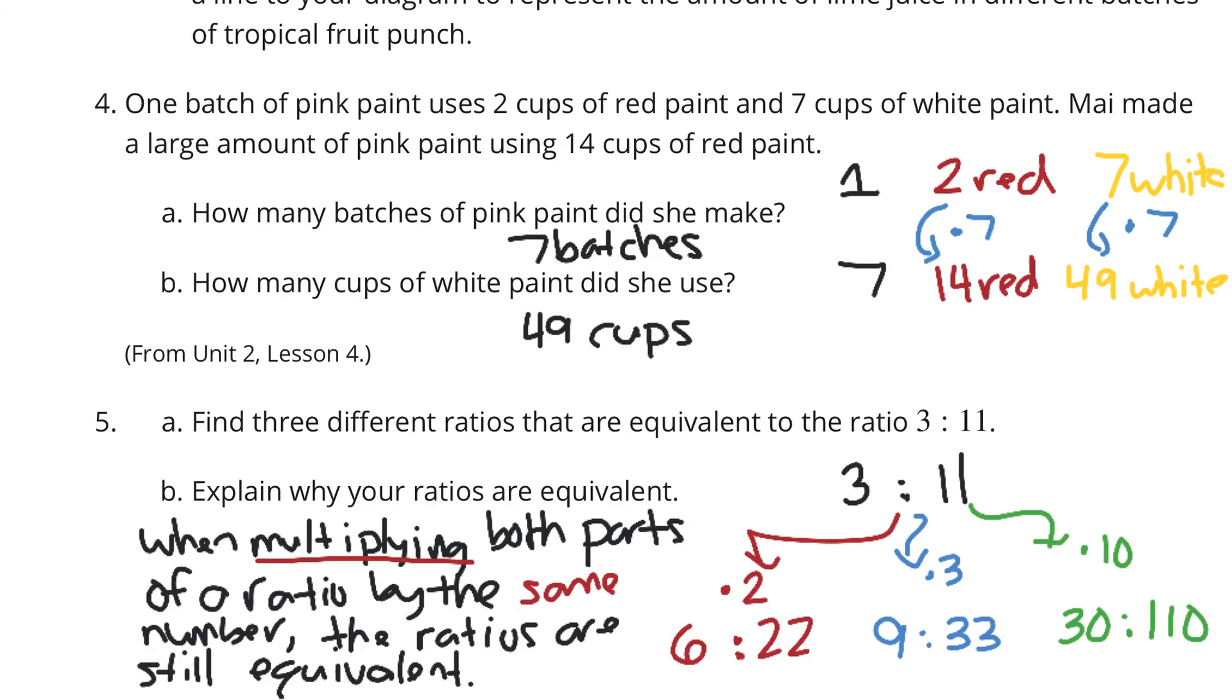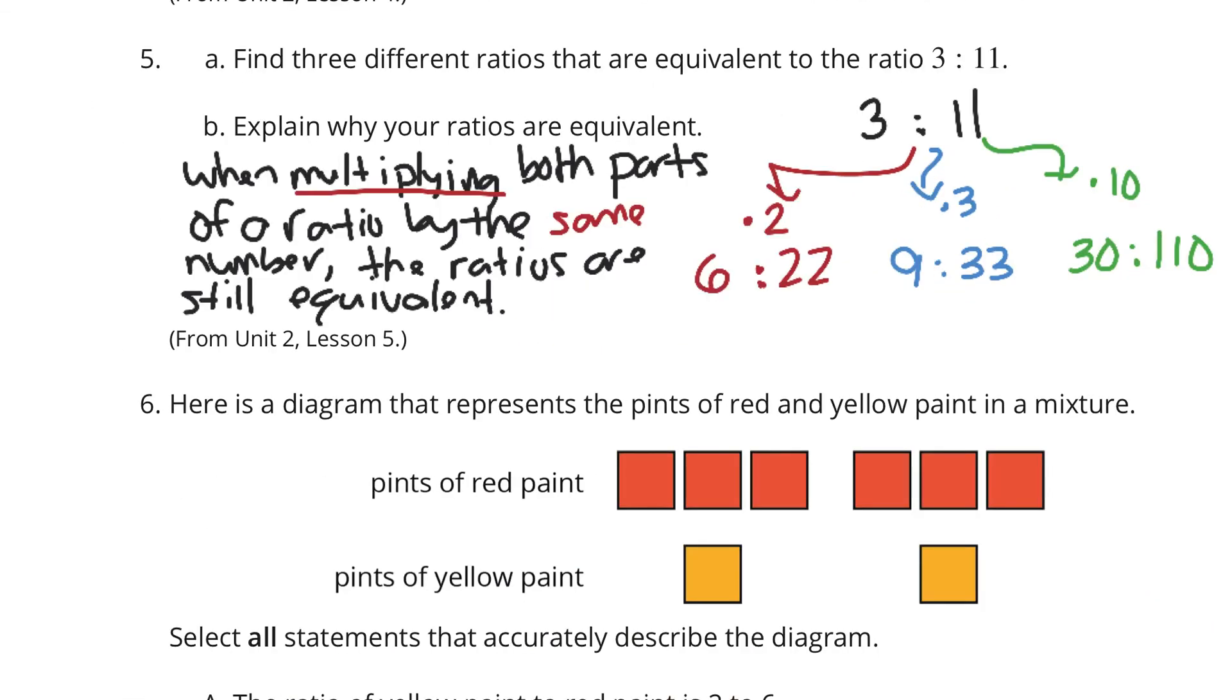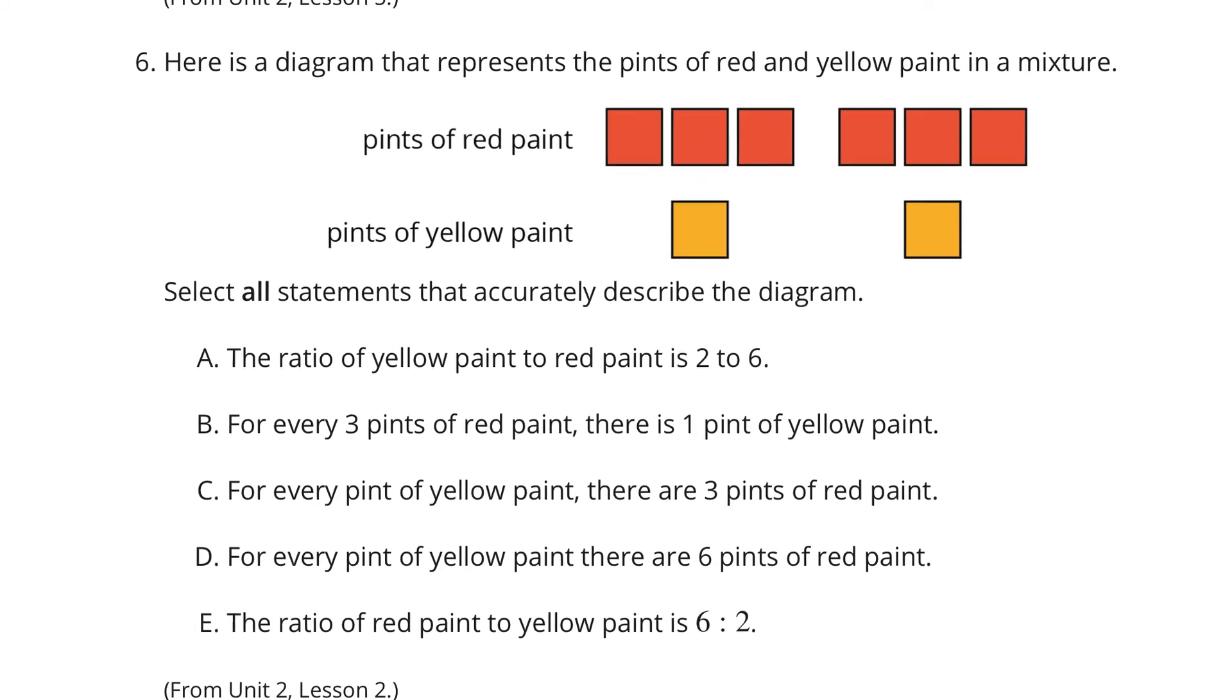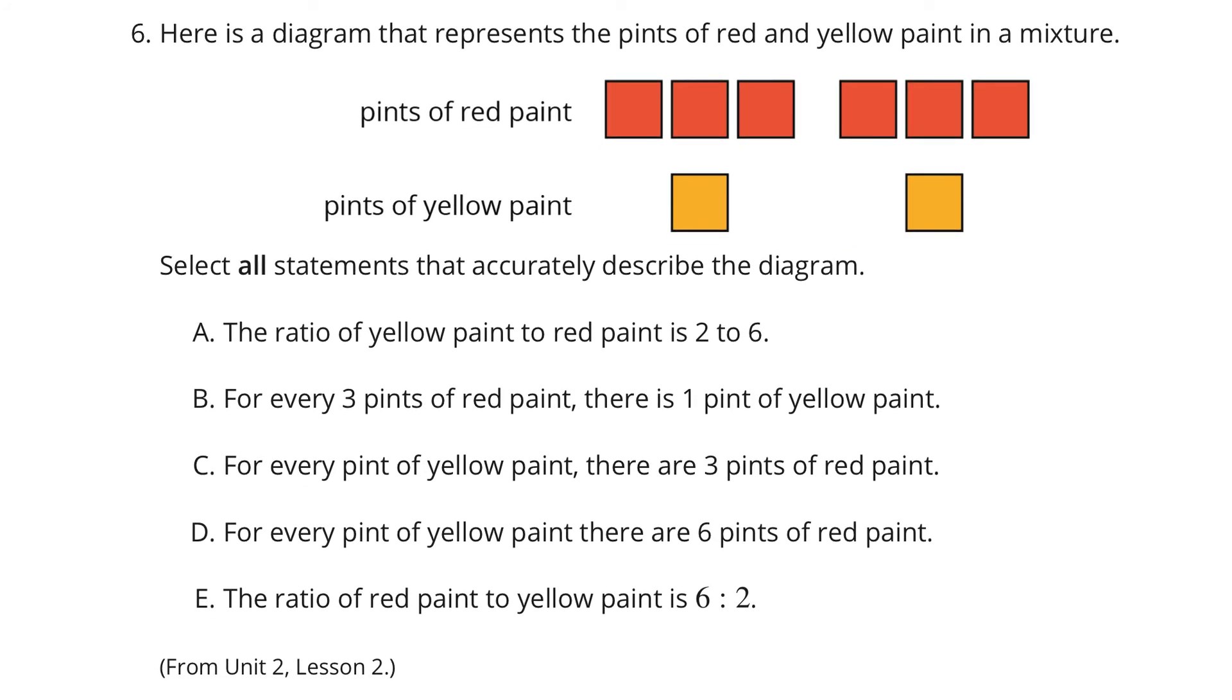Question six, here's the diagram that represents the pints of red and yellow paint in a mixture. Select all statements that accurately describe the diagram. So it looks like we have six red to two yellow, and maybe we can also visualize this as three red to one yellow when it breaks down.